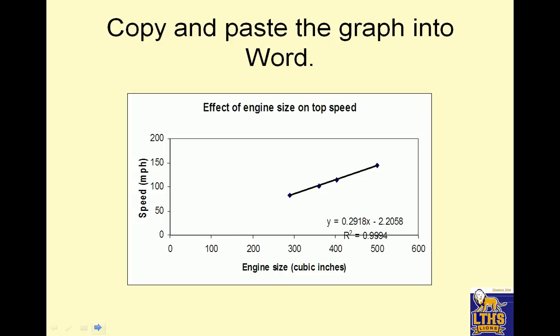Copy and paste the graph into Word. So the effect of engine size on top speed, you should have something that looks very much like this. You could move this so there's not a line through here. So the slope of this line is 0.2918.